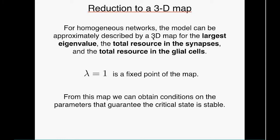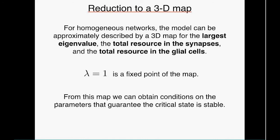Taking the total resource in synapses and total resource in glial cells as state variables, the critical state with lambda equal one is a fixed point of this map. We can assess its stability using the Routh-Hurwitz criterion, obtaining inequalities on parameters for which the critical state is stable — confirming this works for a large range of parameters. It also appears that a secondary glial network is necessary: it seems the interplay between supply and consumption of resources alone is insufficient.